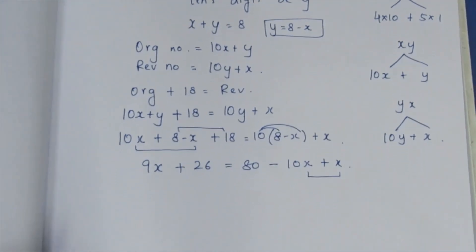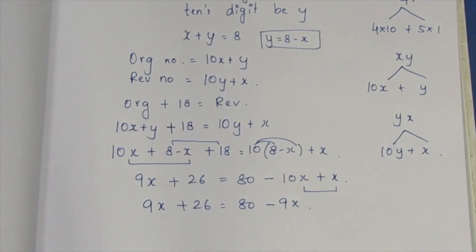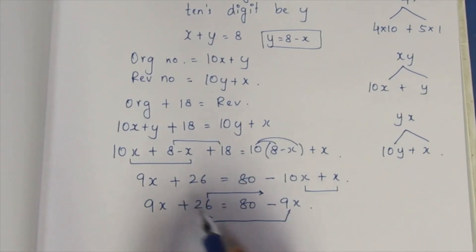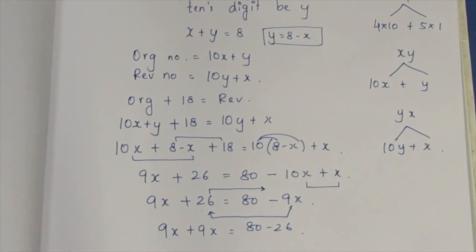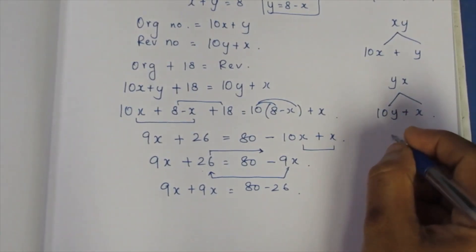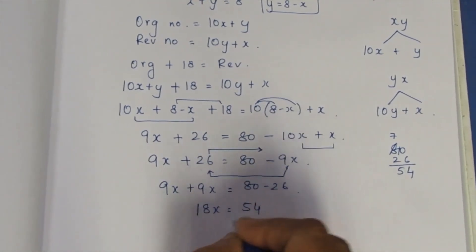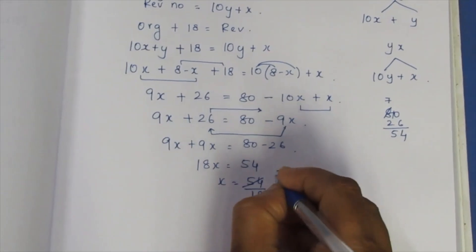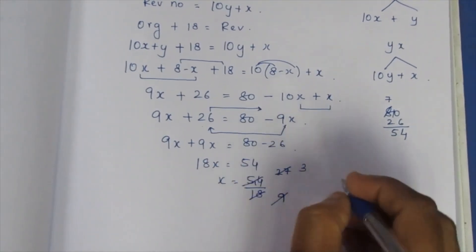Solving: 9x + 26 = 86 − 10x. Bringing x terms to one side: 18x = 54, so x = 54 ÷ 18. Cancelling, x = 3.